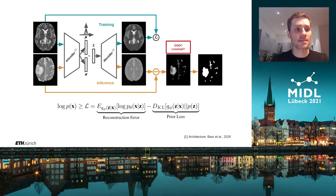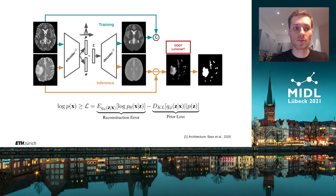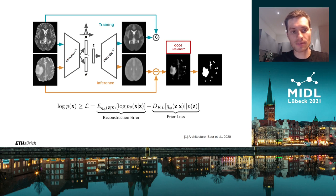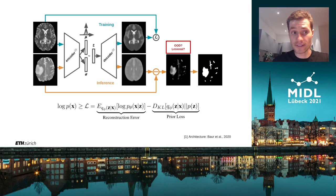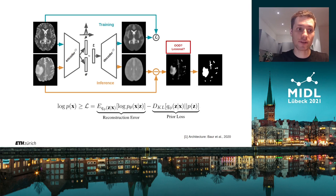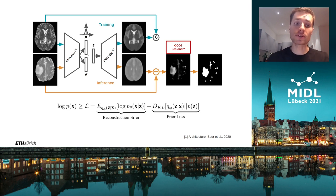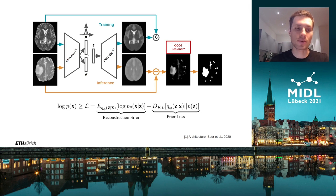The following depicts our lesion detection framework using a variational autoencoder, as commonly used. During training, the encoder learns a representation mapping using healthy samples only. During inference, we perform inference on potentially lesional samples where the model is not expected to reconstruct lesional parts of the brain faithfully. Anomaly detection is then typically performed on the residual map, a thresholded version thereof, or in the latent space representation.